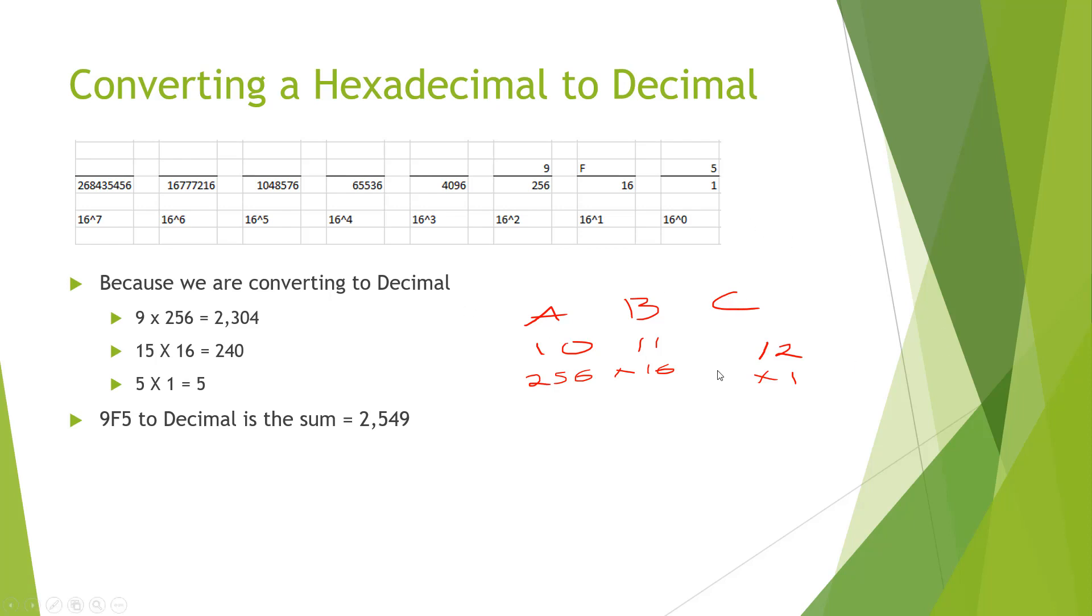12 times 1 is 12. 11 times 16 is 176. 10 times 256 is 2560. So we add it up. 2560 plus 176 plus 12 is 2748.